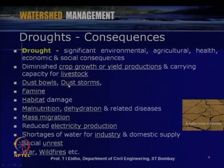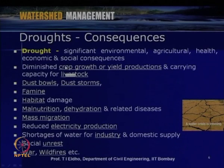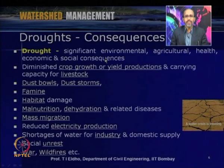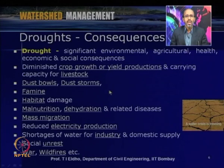Now let us look into the consequences of droughts. There are significant consequences on the environment. These can be classified into environmental consequences, consequences on agriculture, health and economic consequences, and social consequences. So drought consequences can be classified into environmental, agricultural, health, economic, and social categories.